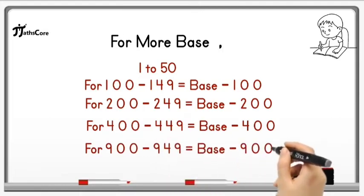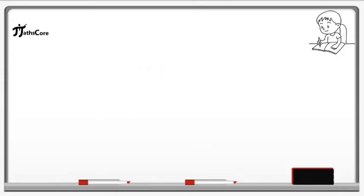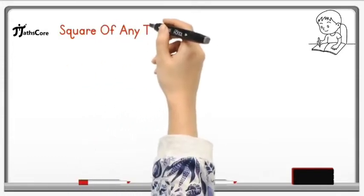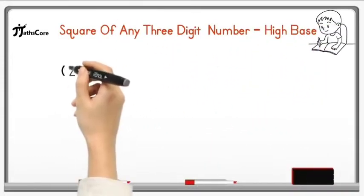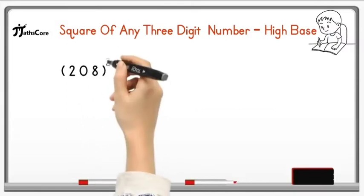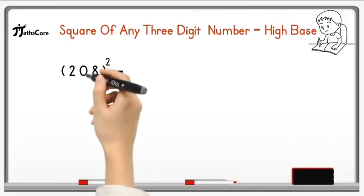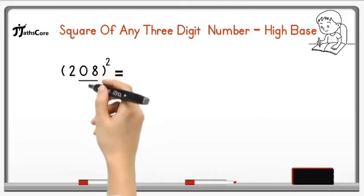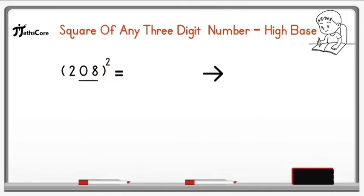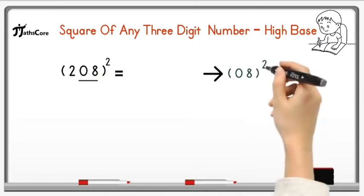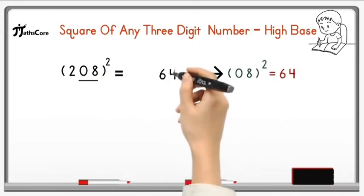Let's solve first example of square of any three-digit number with high base. Example is here: 208 square. So first of all, take unit and tens place digit together and find out square of it. So 08 square is equal to 64. Now write down 64 in the answer.